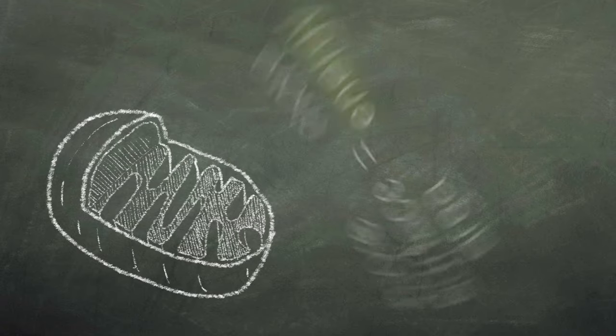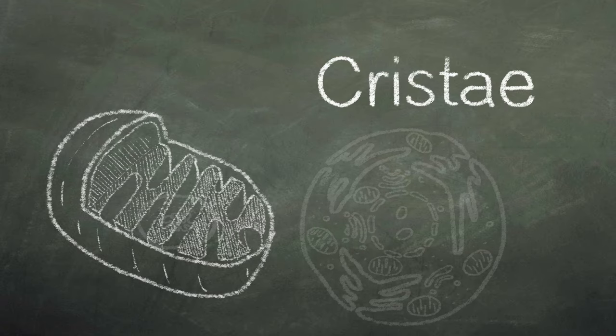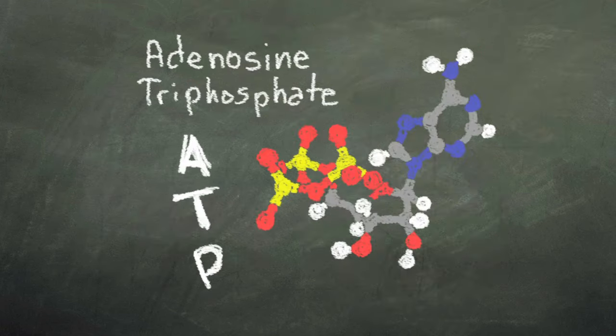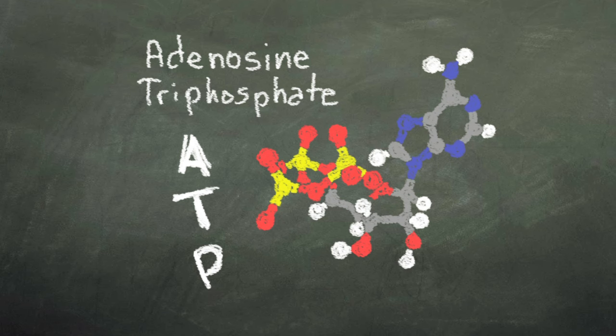The folds you see here are called CRISTI and they contain proteins that carry out energy harvesting chemical reactions to create ATP, a fuel source for the cell.